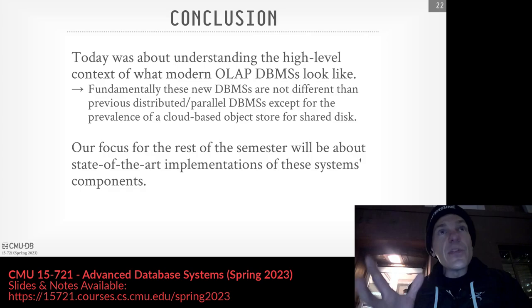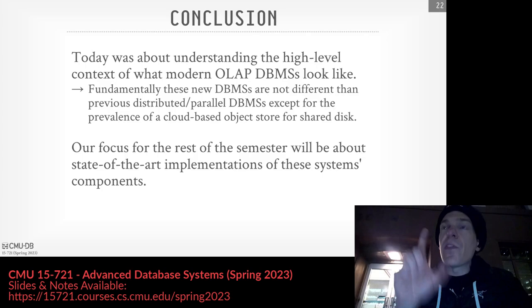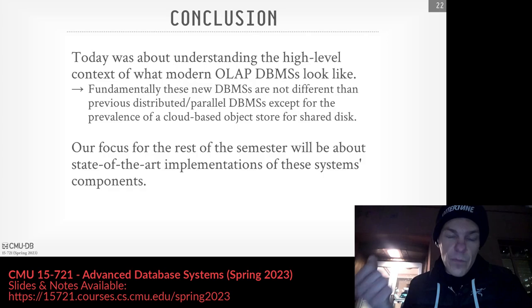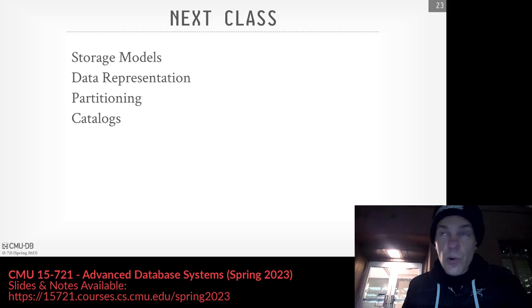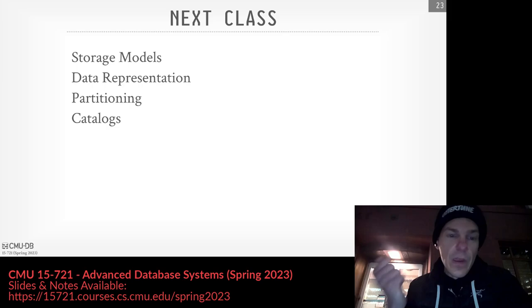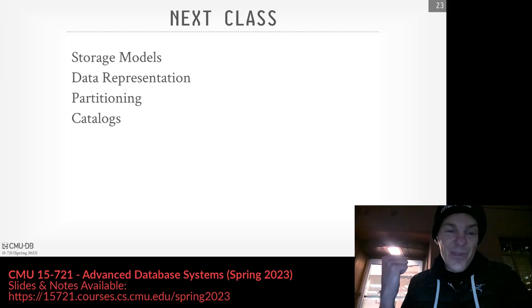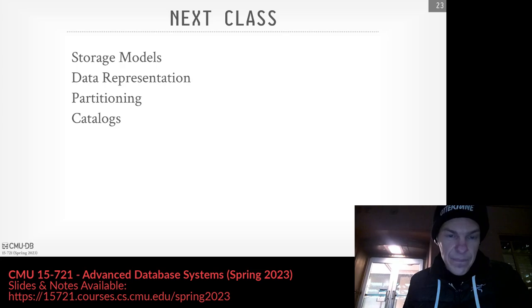This was just supposed to be a high-level overview of what modern OLAP systems look like. The way you build each worker node is not different from how you build a single-node data system — it's the data movement stuff we talked about before, and also assuming we're retrieving data from a cloud-based object store with shared disk. The rest of the semester, we focus on how to build these different components using modern techniques. Next class, we're going to talk about storage models — how to represent data within the columns themselves, the bytes, how to do table partitioning, and system catalogs. And then we'll also talk about project one.